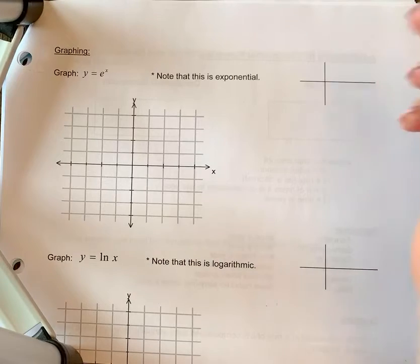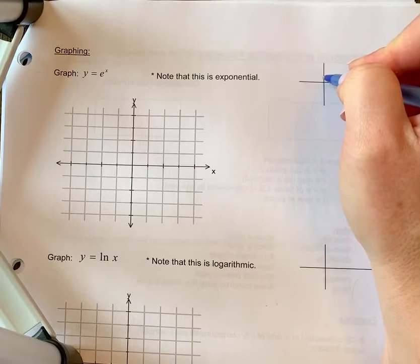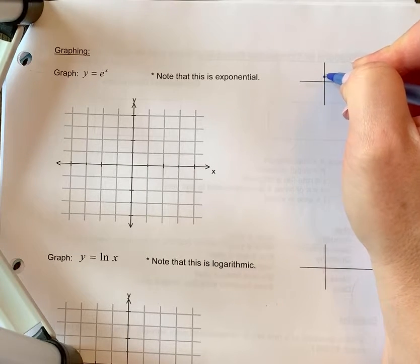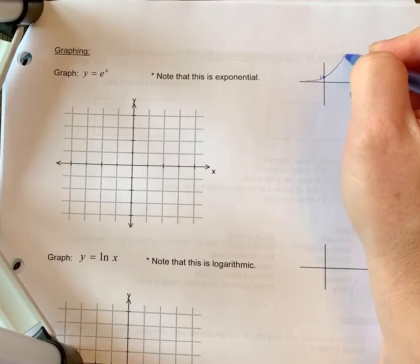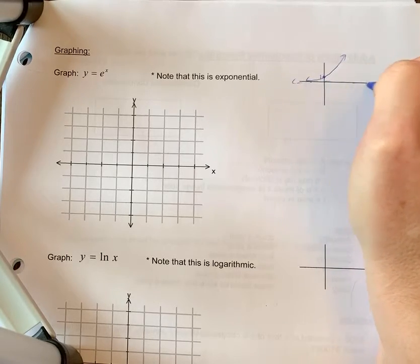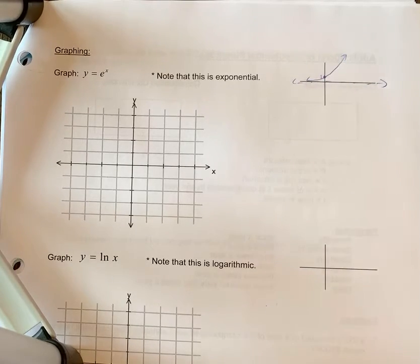So just a reminder that exponential had that common point of a y-intercept at 1, and it would have this general shape here with an asymptote. So just to visualize that exponential growth again.